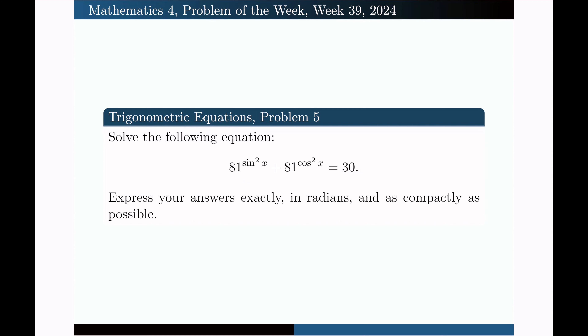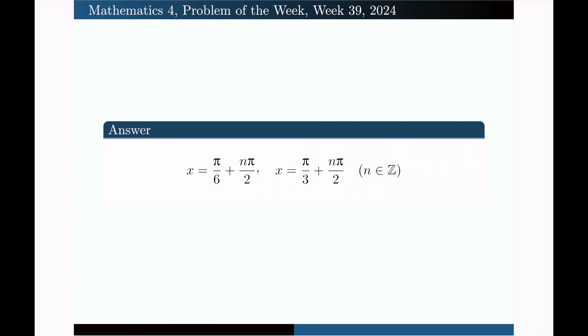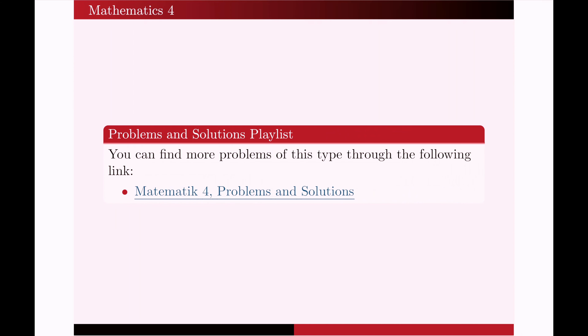Express your answers exactly in radians, as compactly as possible. It would be a good idea to pause the video and try to solve the problem yourself first. If you do the problem correctly, the answers you will get are: x equals pi over 6 plus n pi over 2, or x equals pi over 3 plus n pi over 2,